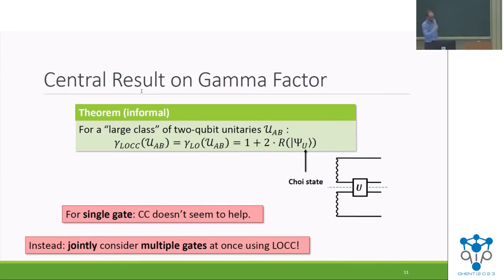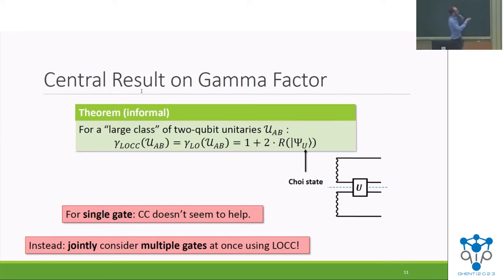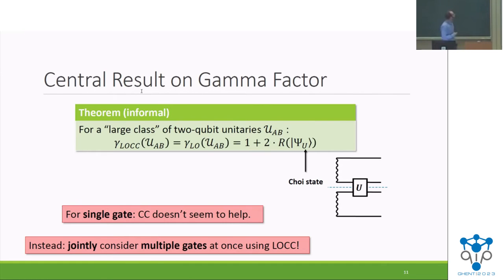So the gamma factor of a CNOT equals the gamma factor of an EBIT, which is one plus two times the robustness of entanglement, and that turns out to be three. This argument gets more complicated for other gates — we cannot do the same for all gates — but we are still able to show that for a large class of two-qubit unitaries, including all two-qubit Clifford gates as well as all controlled rotation gates, the gamma factor under LOCC and LO is the same. It equals one plus two times the robustness of entanglement of the Choi state. So classical communication doesn't actually help in the quasi-probabilistic simulation for this large class.